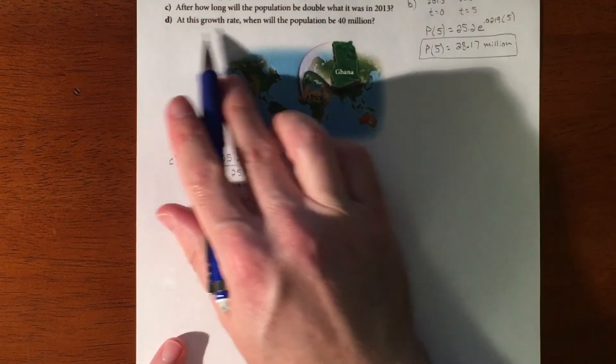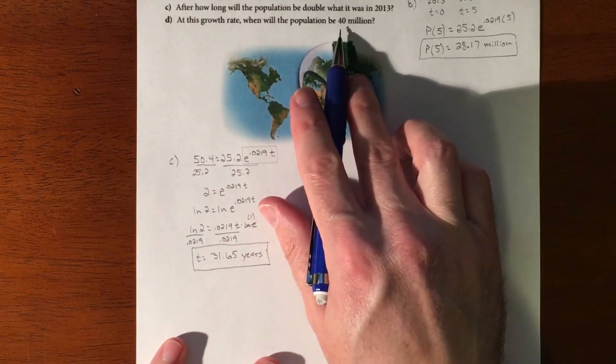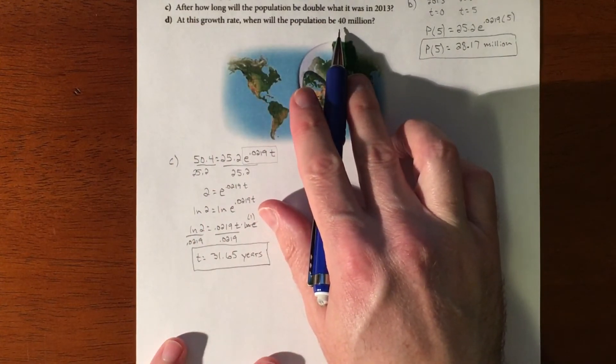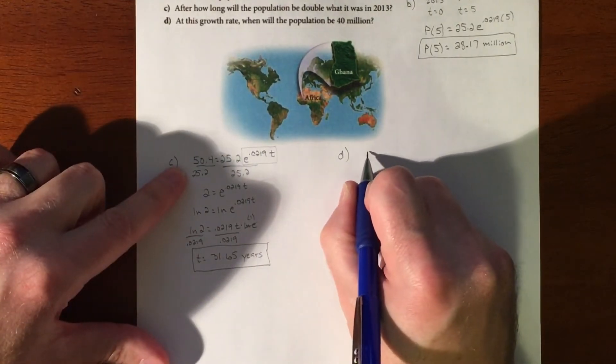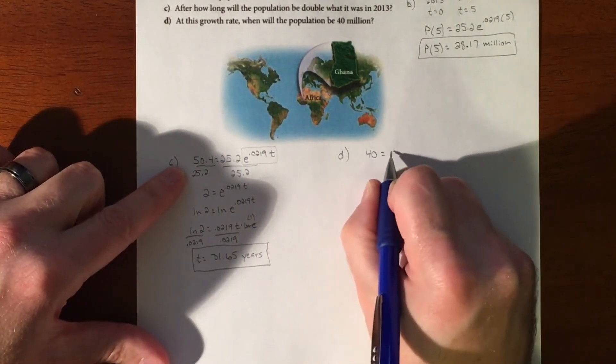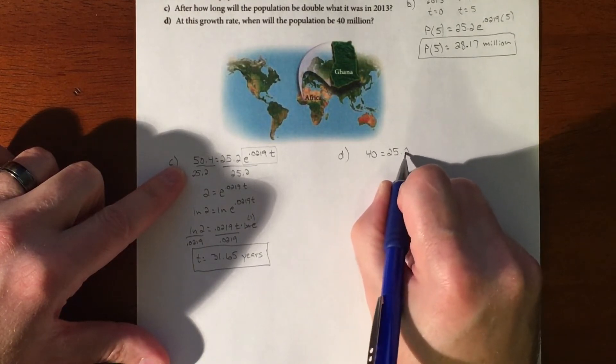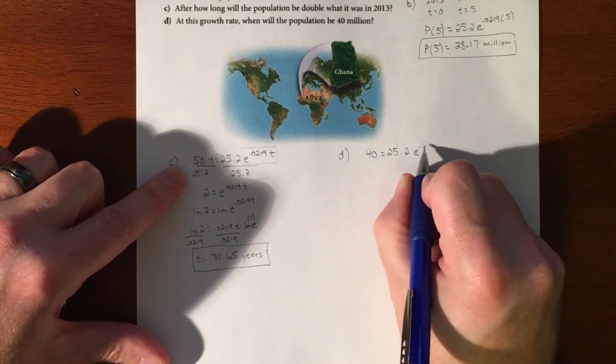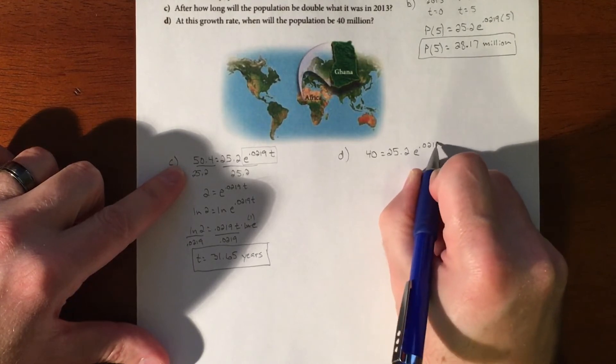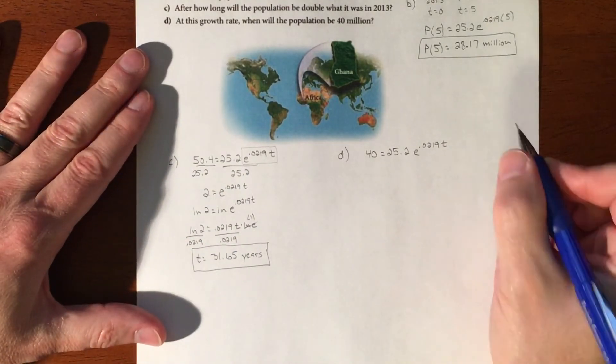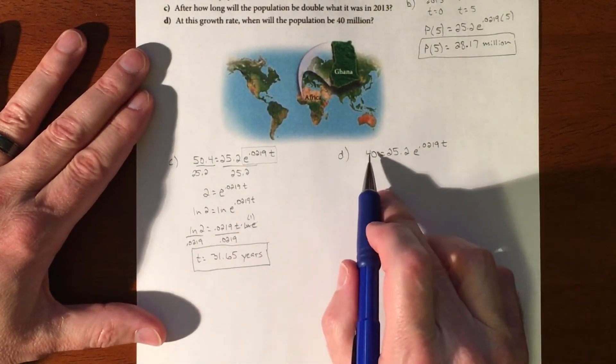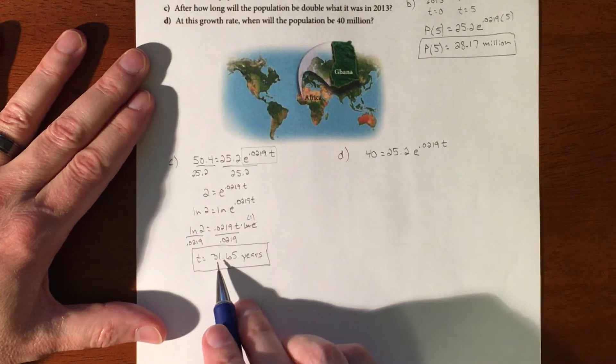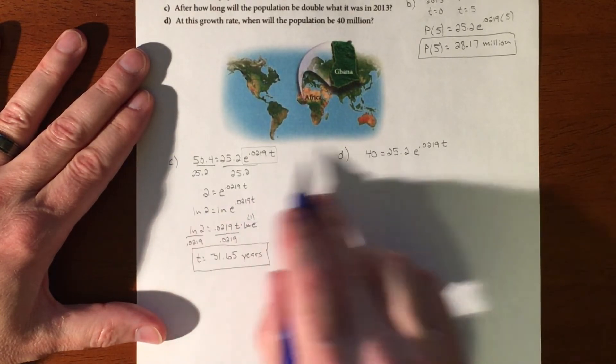Last one. At this growth rate, when will the population hit 40 million? So rather than us doubling anything, we are just setting it equal to 40. This one's not going to divide clean. This is not going to be one where I can shortcut that. Same kind of situation, exactly the same math. The only difference is I don't know what that's going to divide into. But it's going to take less than 31.65 years because you're looking at a smaller population.